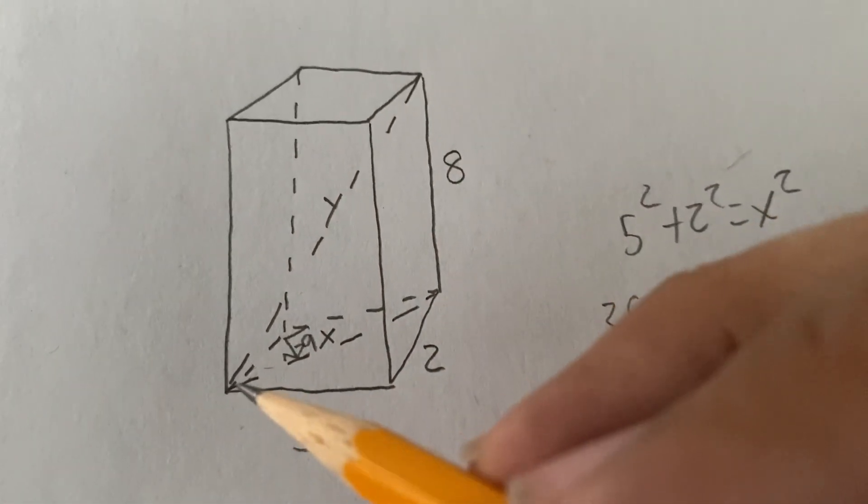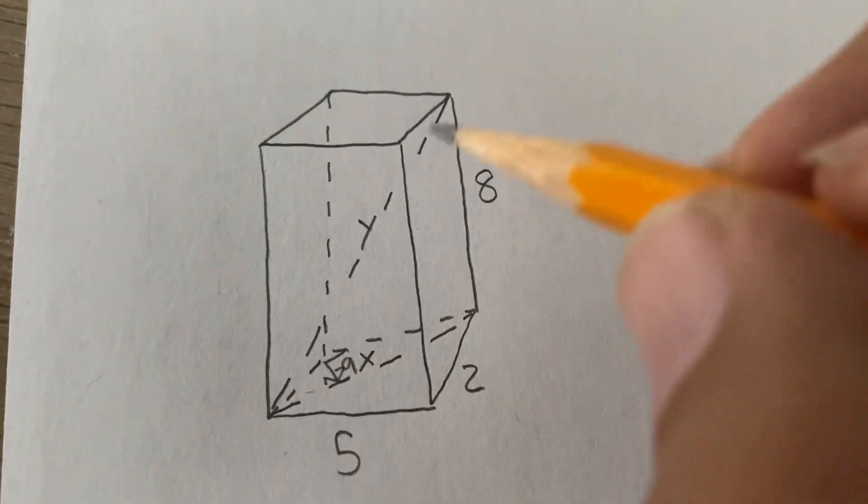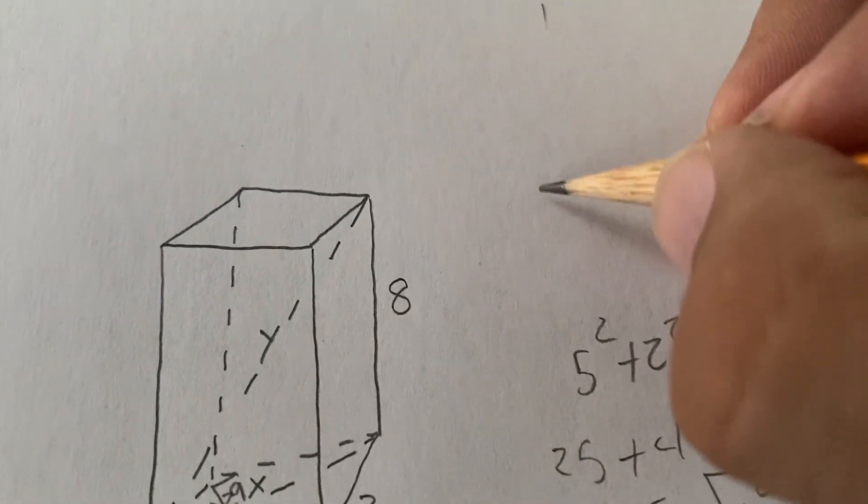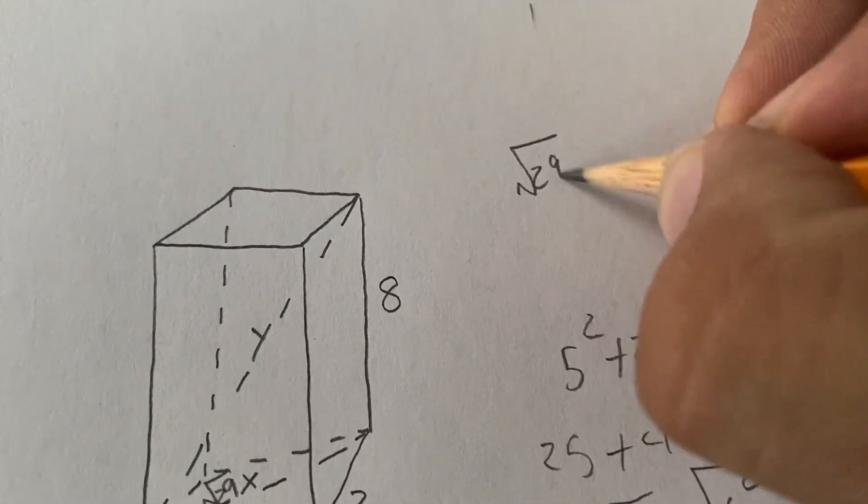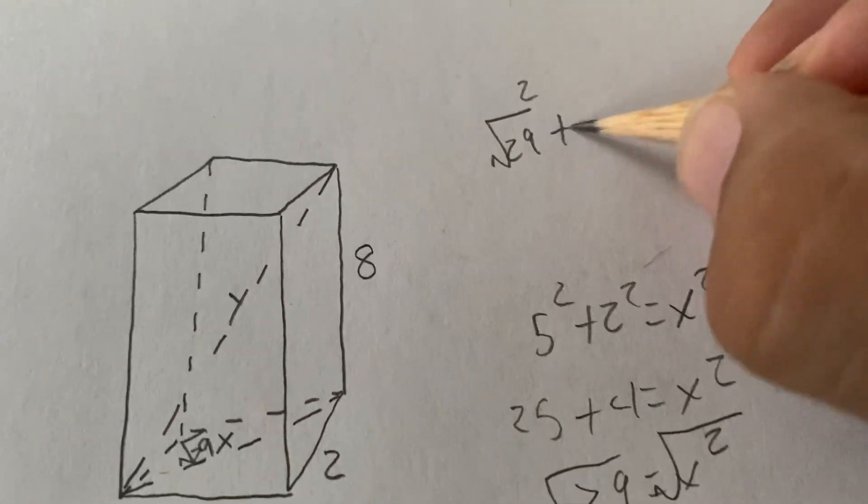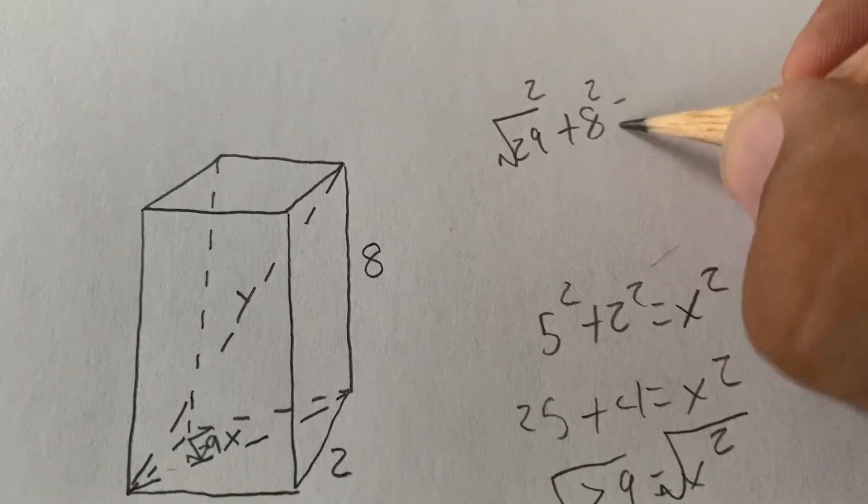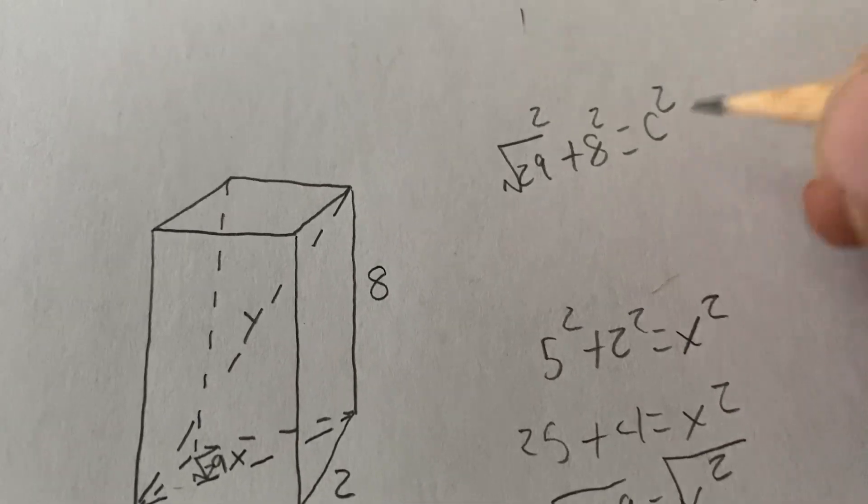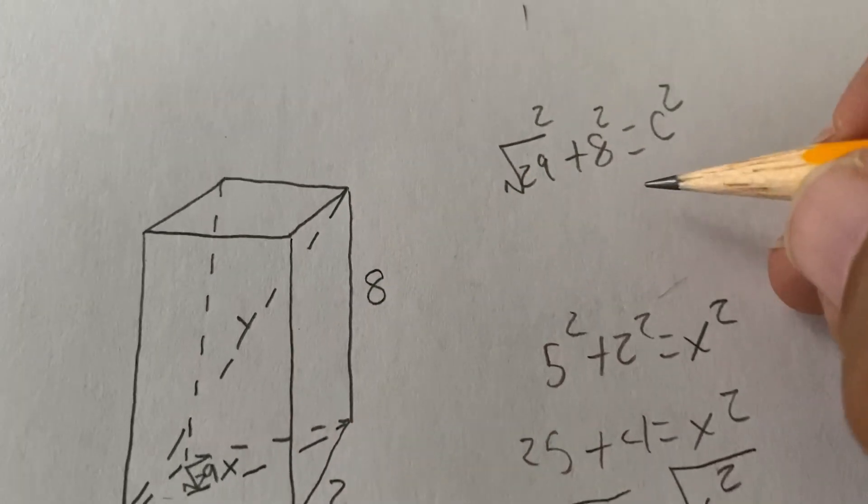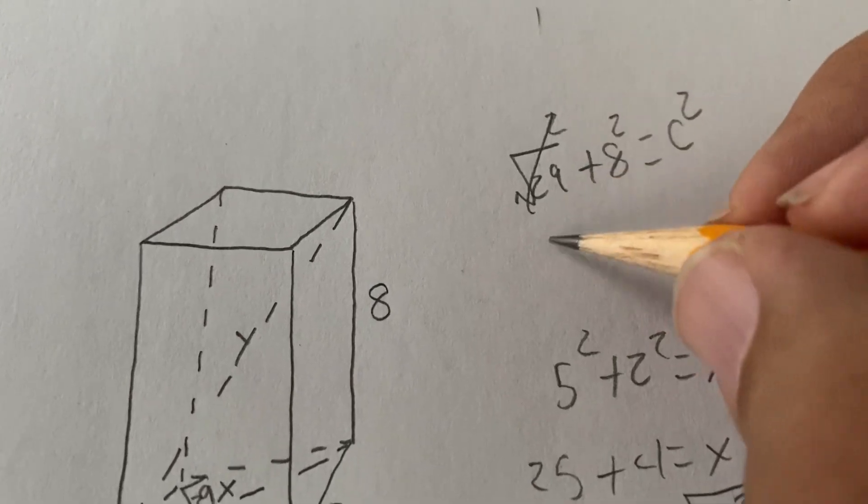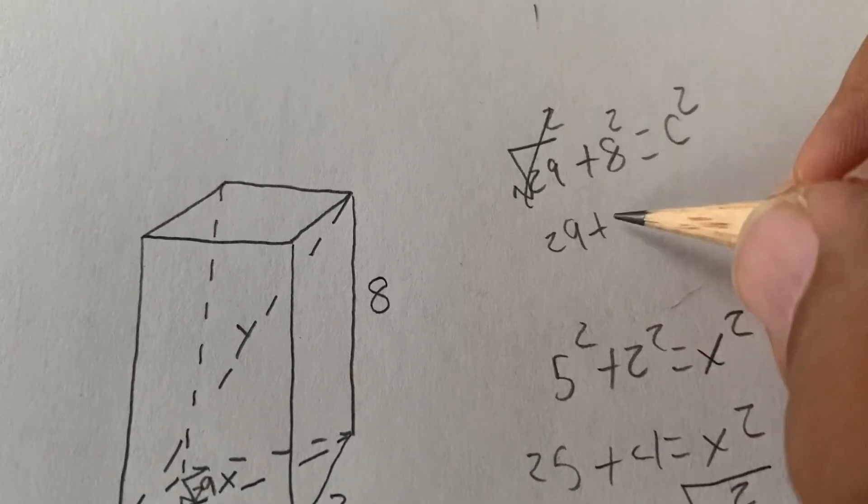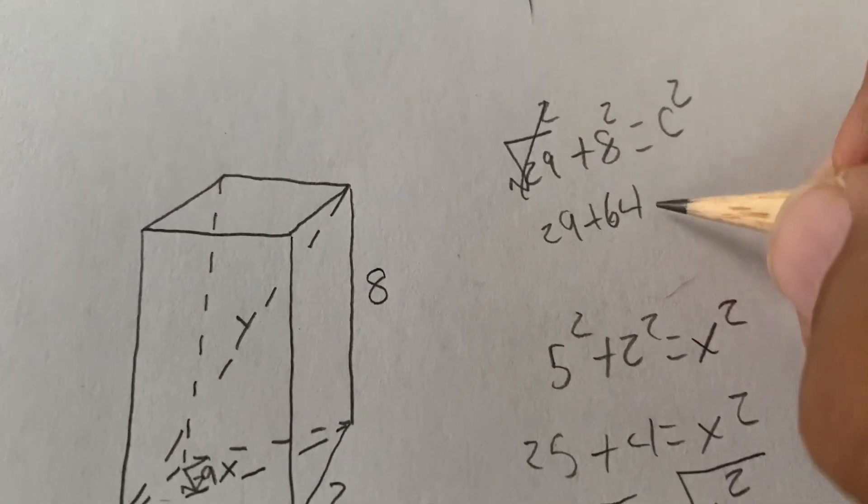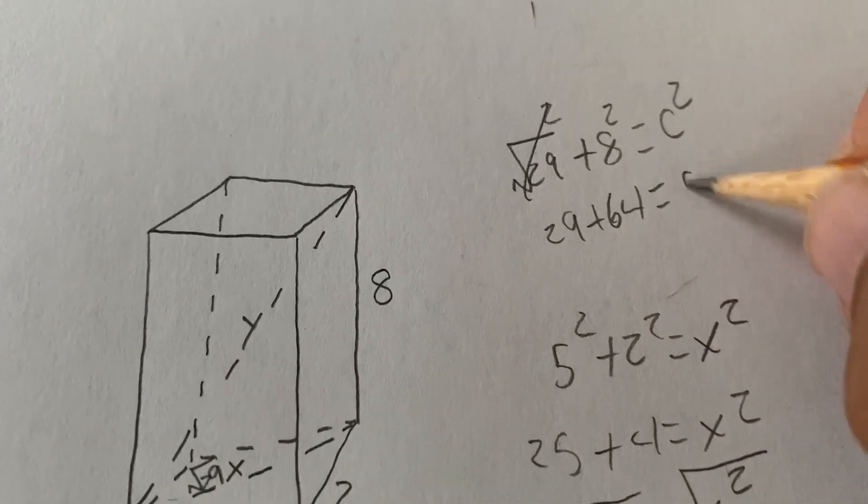So, now we're going to do a squared plus b squared equals c squared. So, the square root of 29 squared plus 8 squared equals the y. So, I wrote c squared, but that's the y right there. So, this is going to cancel and make 29. This is going to make 64. And then, this is going to be c squared.